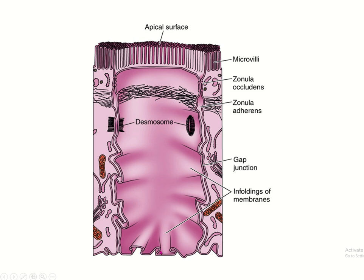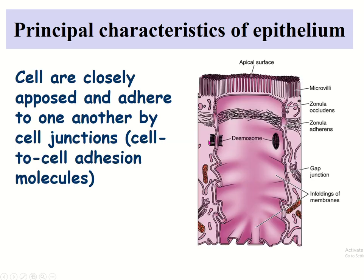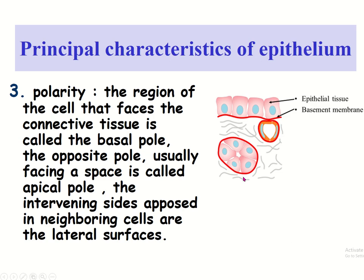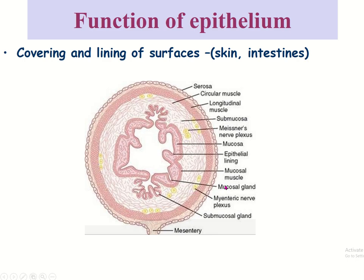On the basal surface, junctional complexes known as hemidesmosomes are also observed. The principal characteristics of the epithelium are: it is avascular, it rests on a basement membrane, cells are closely opposed and adhered to one another by cell junctions, and it has polarity — apical, lateral, and basal surfaces.